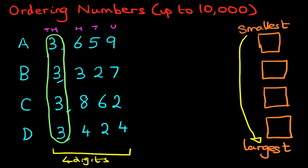If we look at number A, the thousands, it has three thousands here. B has also got three thousands. C has got three thousands. And D has got three thousands. Therefore, we cannot tell which number is larger or smaller just by looking at the thousands. We have to now move across and look at the hundreds.